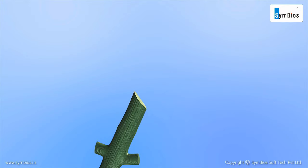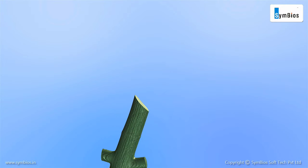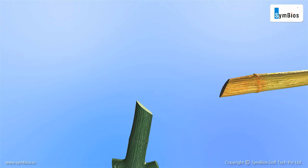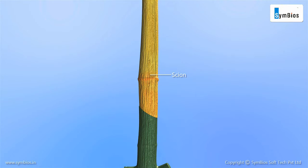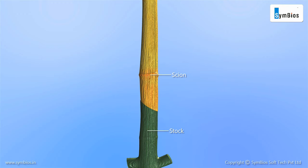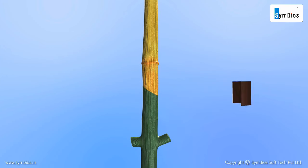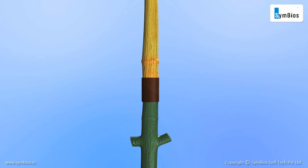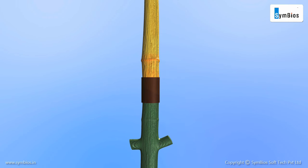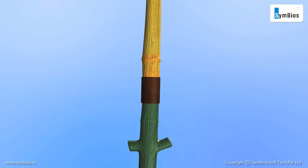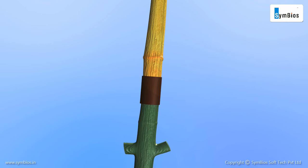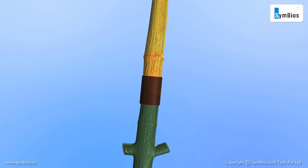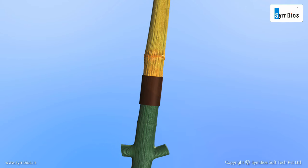In grafting, a twig of one plant called the cion is kept over the cut stem of another plant called the stalk. Then they are tied up together. The tissue of the cion and stalk combine to form a new plant. This method helps in developing a high-yielding and disease-resistant species of plants.